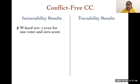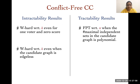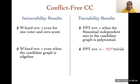For conflict-free CC, the problem is W[1]-hard with respect to the size of the committee, even for one voter and zero score. It is also W[1]-hard even when the graph is edgeless. As a tractability result, the problem is FPT with respect to the number of voters when the number of maximal independent sets in the candidate graph is polynomial, since we can enumerate these independent sets in polynomial time and run the known FPT algorithm for CC for every maximal independent set. The problem is trivially FPT with respect to N and M, and we improve this running time to 1.1996^M for a constant number of voters, and to 1.4423^M for single-peaked profiles.